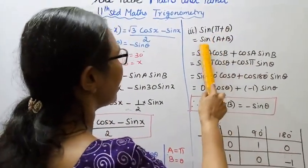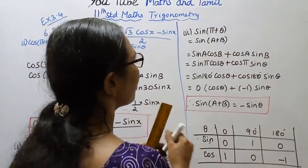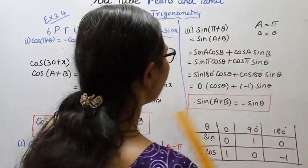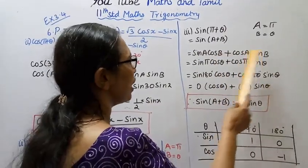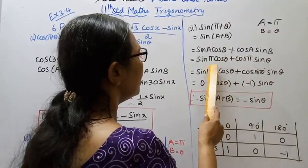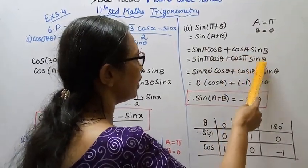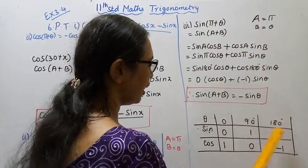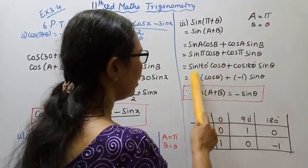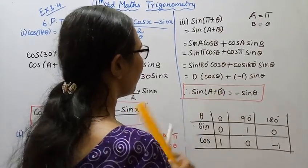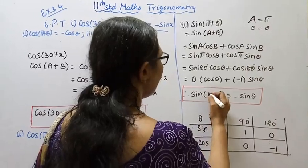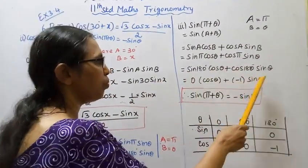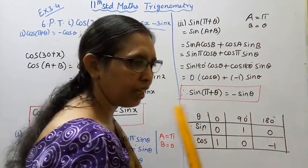For sin(π + θ), using sin(a + b) = sin a cos b + cos a sin b, with a = π, b = θ: sin π cos θ + cos π sin θ = sin 180° cos θ + cos 180° sin θ. Since sin 180° = 0 and cos 180° = -1, this equals 0 + (-1) sin θ = -sin θ. Therefore sin(π + θ) = -sin θ.